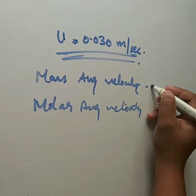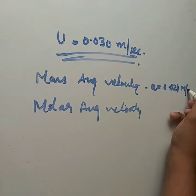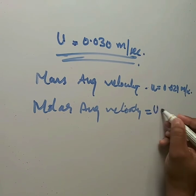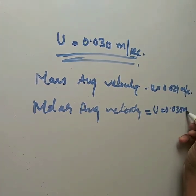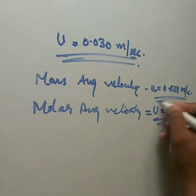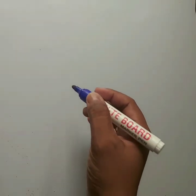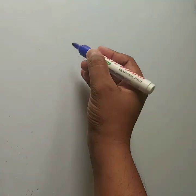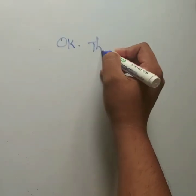So the two parameters we calculated are: mass average velocity (small u) = 0.029 m/s, and molar average velocity (capital U) = 0.030 m/s. For any doubts about average velocities, please refer to the last lecture video. Thank you.